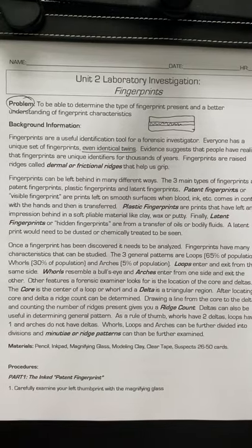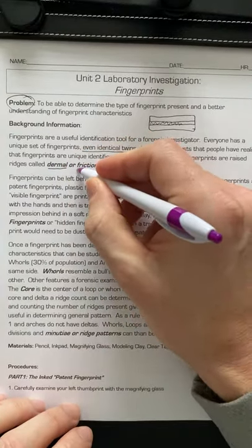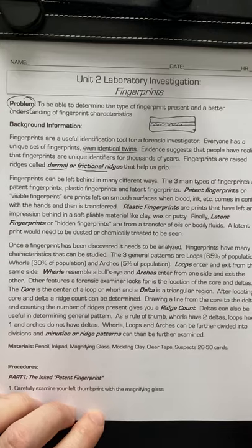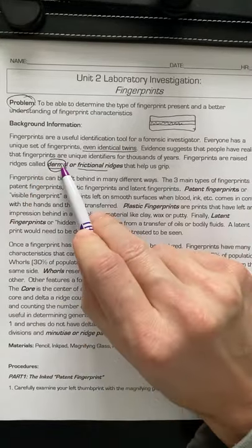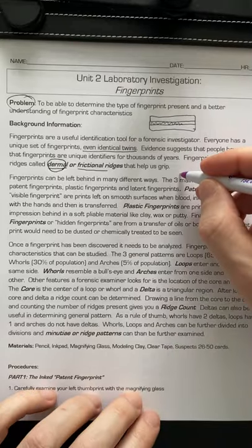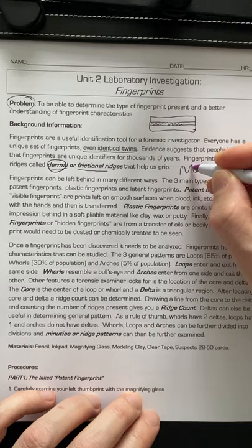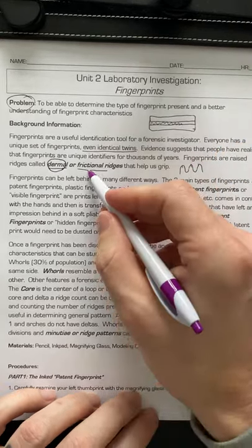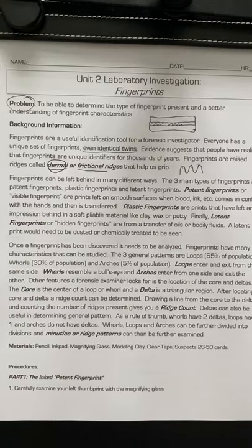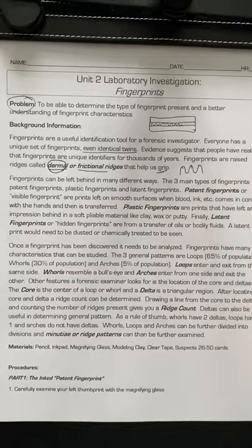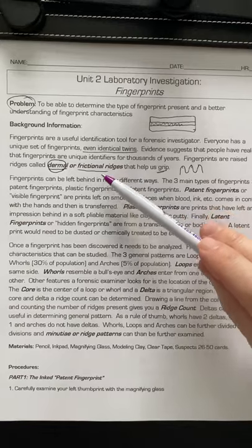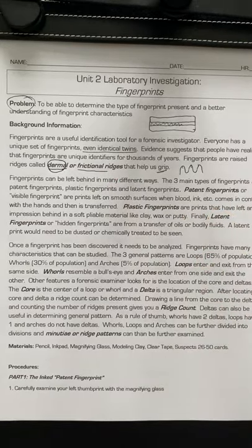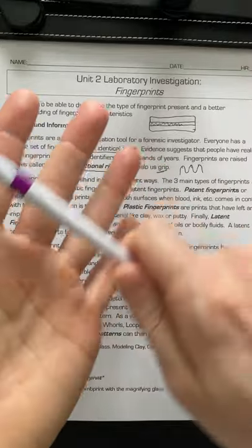Fingerprints can also be called dermal ridges or frictional ridges. 'Derma' is a prefix — like going to the dermatologist, you'd see the skin doctor — so these are skin ridges. They're called frictional ridges because they help you grip; these ridges supply friction so you can grab onto things more easily. Friction ridges are also found on the soles of your feet, your toes, and all down your hands — not just your fingertips.